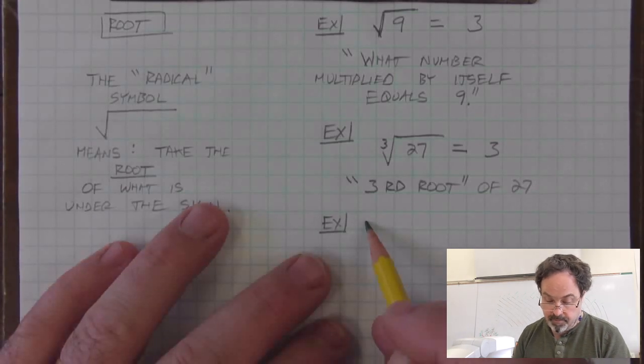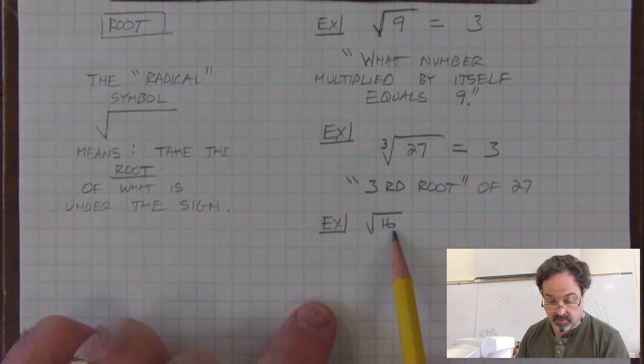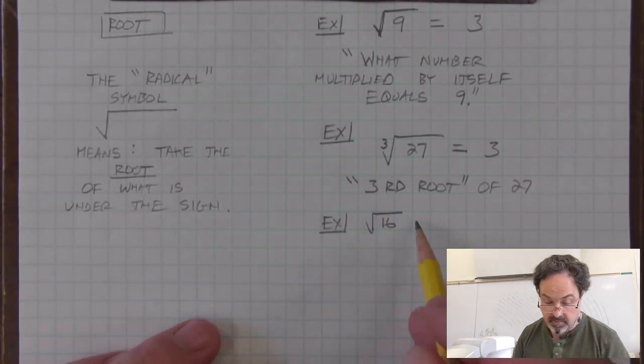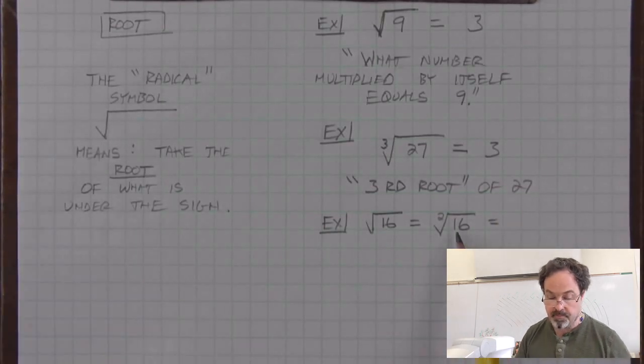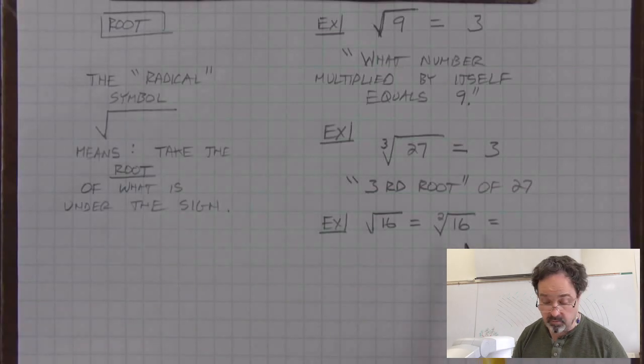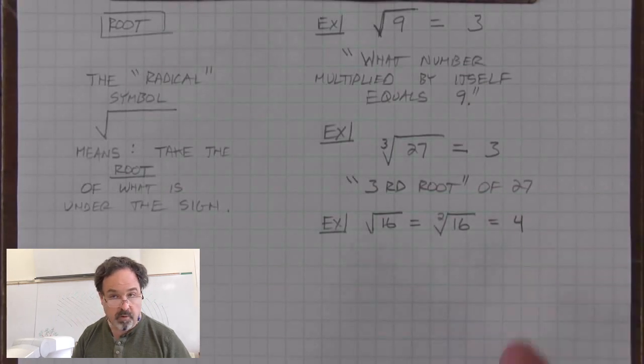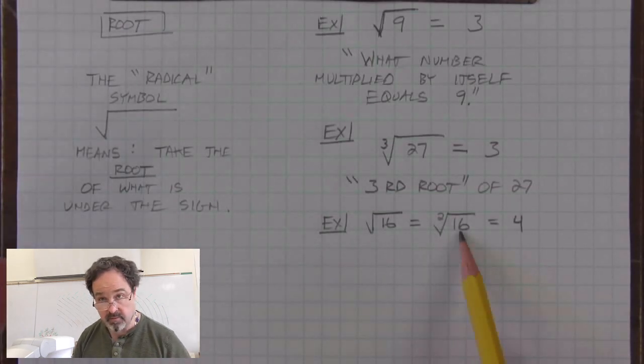For example, if we write root of 16 with no little number in the symbol, we mean the square root. This is equivalent to writing a 2 there, but we often don't. We're trying to find a number that when multiplied by itself equals 16, or what number squared equals 16. We can guess and check and find that 4 squared equals 16. So the square root of 16 is 4.